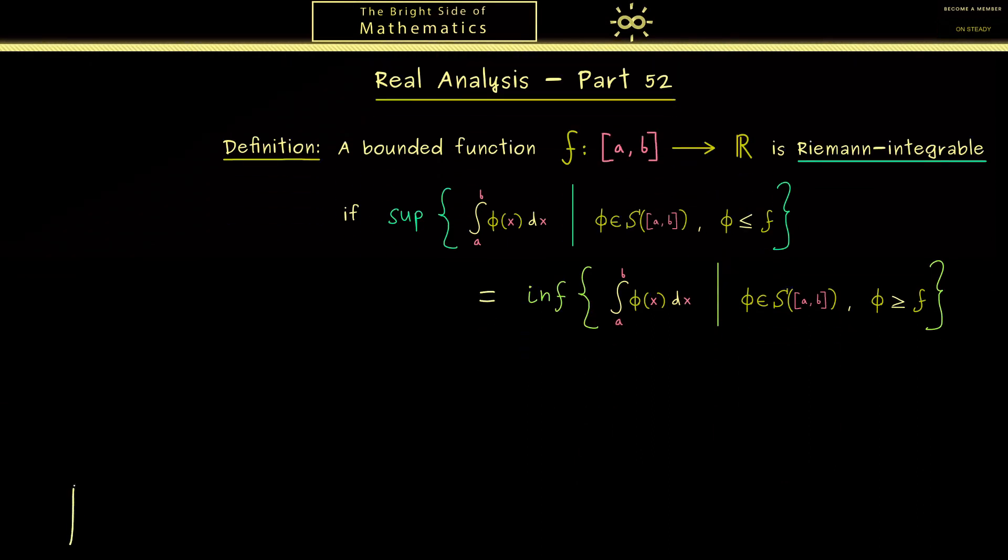To get the idea let's simply draw a small graph here. So you see our mission is that we approximate this area here from above and from below. Now let's say this here is a step function φ and you see it's an approximation from below. Also then you can see without a problem and even with the same partition of the x axis we can choose a step function φ that approximates the integral from above.